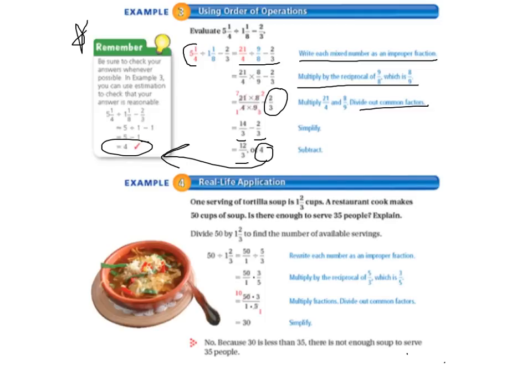In example 4, we have a real-life application. One serving of tortilla soup is 1 and 2/3 cups. A restaurant cook makes 50 cups of soup. Is there enough to serve 35 people? We want to find out how many servings of soup we're going to get out of 50 cups of soup if each serving is 1 and 2/3 cups. We're dividing 50 by 1 and 2/3 to find the number of servings. 50 divided by 1 and 2/3 equals 50 over 1 divided by 5/3.